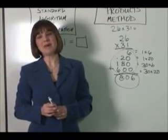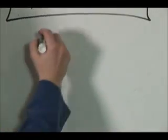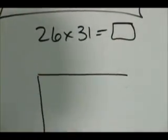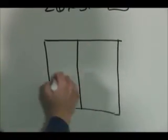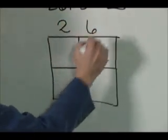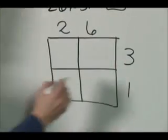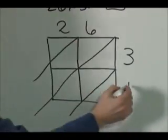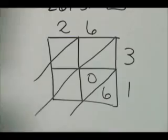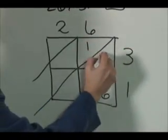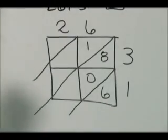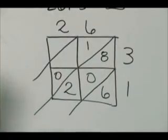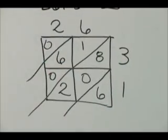Another popular algorithm taught in Everyday Math is the lattice method. Same problem, 26 times 31. This time we have to set up a lattice. Works like this. We put the 26 on top and the 31 along the side like that. And then we draw these diagonals. And then we do 1 times 6 and fill it in like that. 06. 3 times 6, 18. 1 times 2. No effort to say 1 times 20 by the way. 0, 2. And 3 times 2. 0, 6.